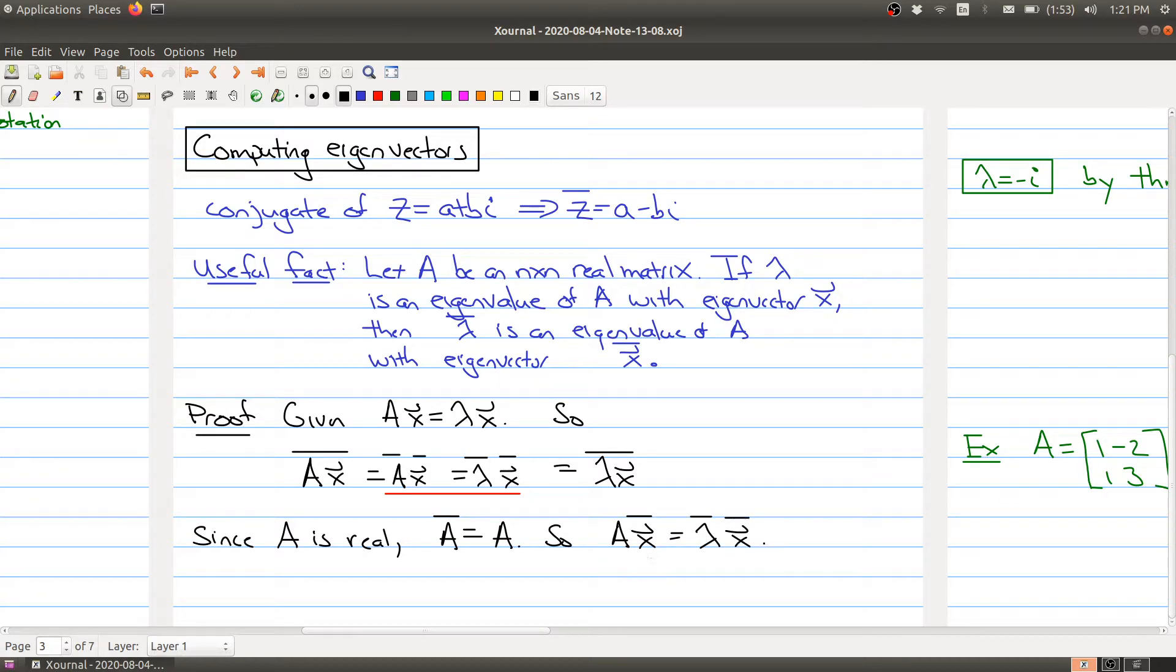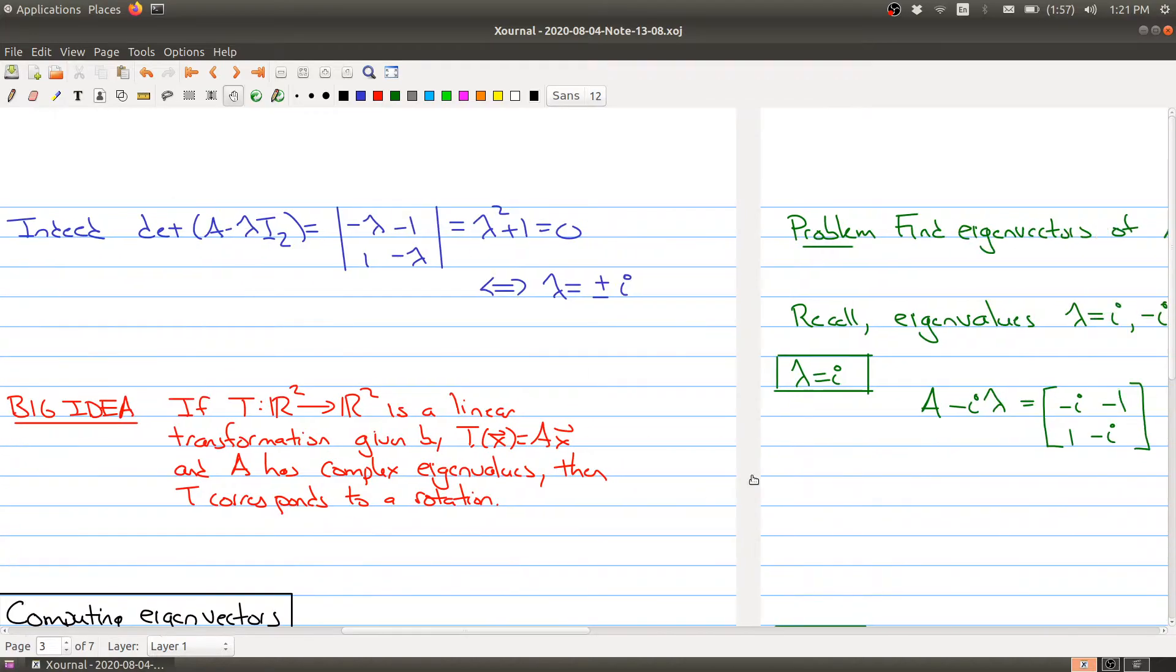This expression right here is just telling me that the conjugate of lambda is an eigenvalue with eigenvector the conjugate of the vector x. This is great when you come across a matrix with complex eigenvalues, because if you can find one eigenvalue and its eigenvector, just by taking its conjugate, you get the second one for free.